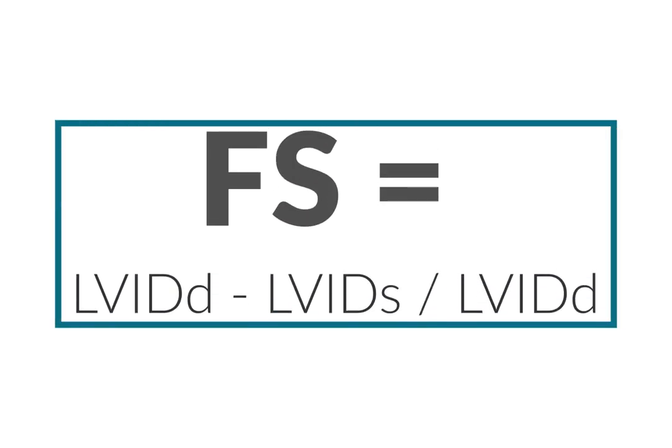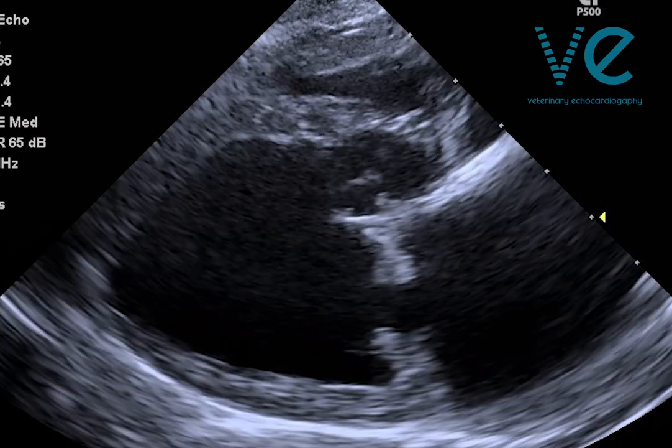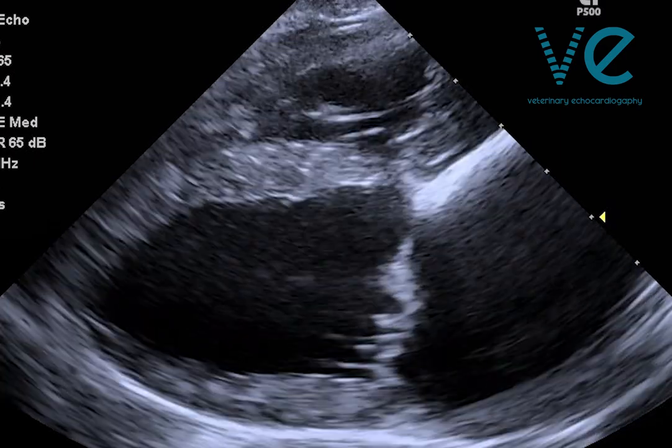Fractional shortening is simply the size change of the left ventricle between diastole and systole along a single linear plane. Fractional shortening over 25% is considered normal, but how likely is it that this patient — who has severe long-standing mitral valve disease and a dilated left ventricle — actually has normal left ventricular systolic function? This left ventricle is having to work extra hard to deal with this exceptionally large volume of blood.